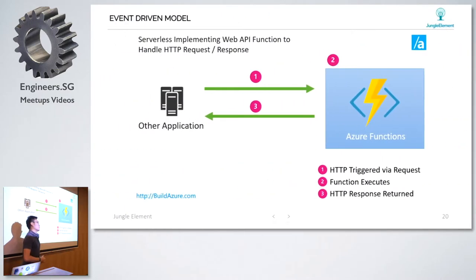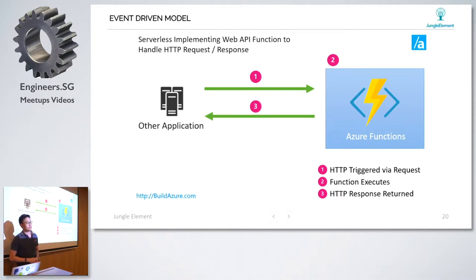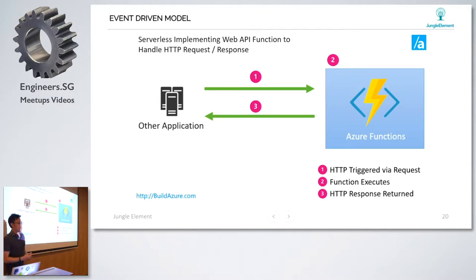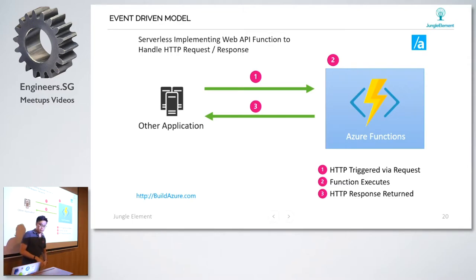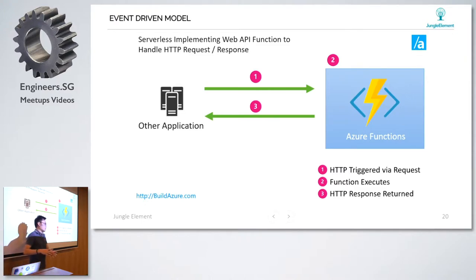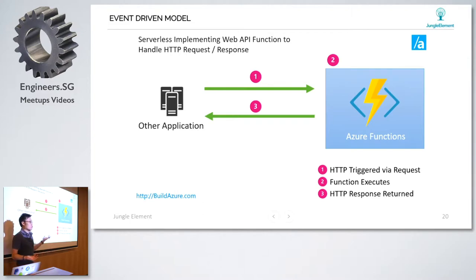Event-driven - everything is driven by an event. If your client sends an HTTP trigger to a function, the function recognizes this HTTP request trigger, starts to process and compute everything at the function level. Once it's done computing, it returns you an output and sends a response back to your client.